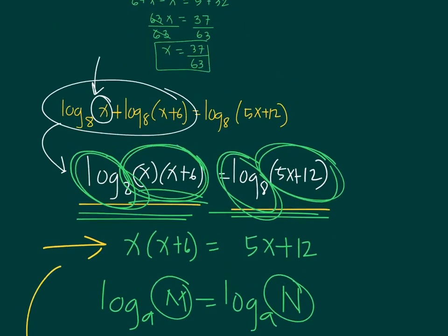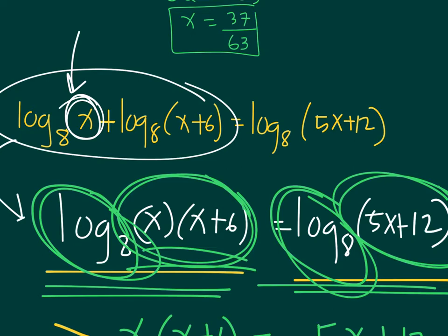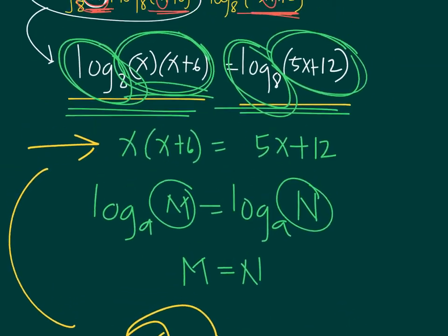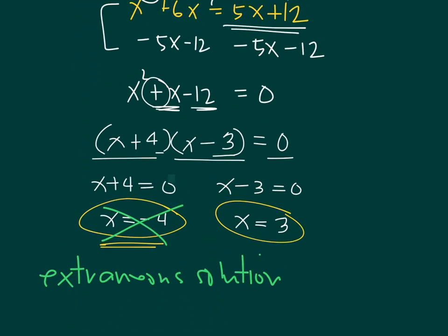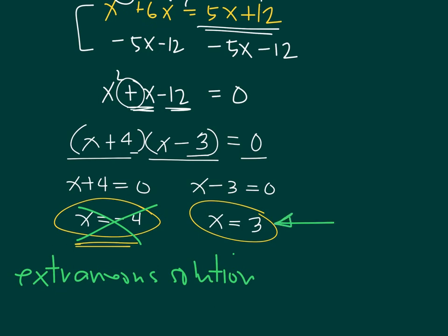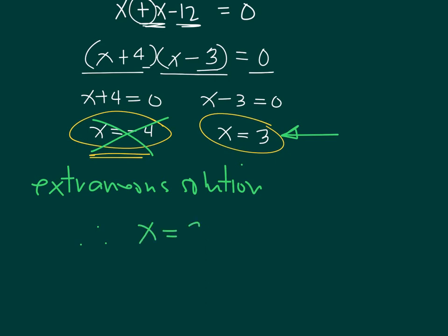For x = 3: substituting gives x = 3 (positive), x+6 = 9 (positive), and 5(3)+12 = 27 (positive). All arguments are positive, so x = 3 is valid. The only solution to this equation is x = 3, or in set notation, {3}.